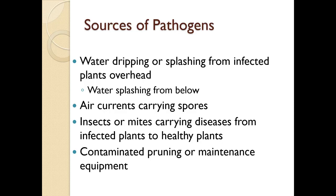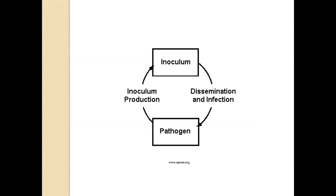You can even be a vector for certain diseases — something to really consider. This is the basic plant disease life cycle: the pathogen produces inoculum in large quantities, then it disseminates and creates infection. Some things are obviously much more detailed, but this is the basic plant disease life cycle.